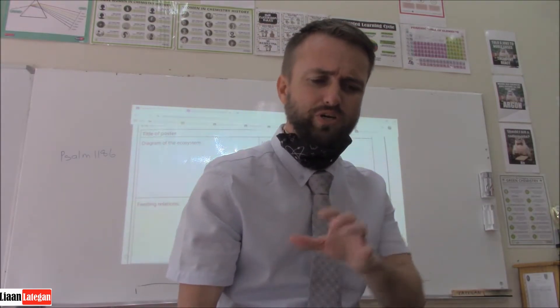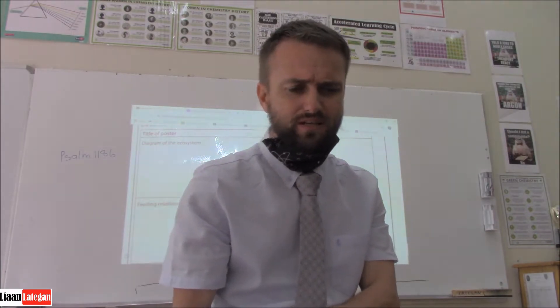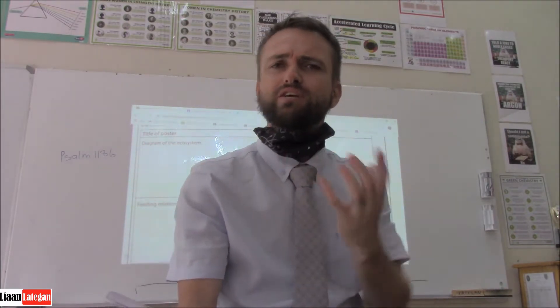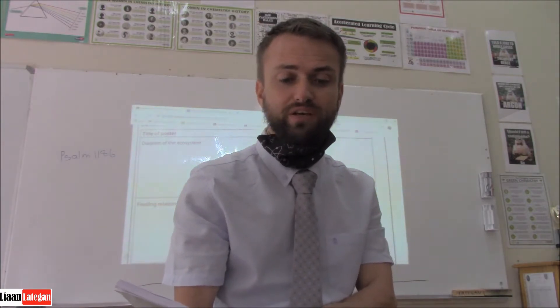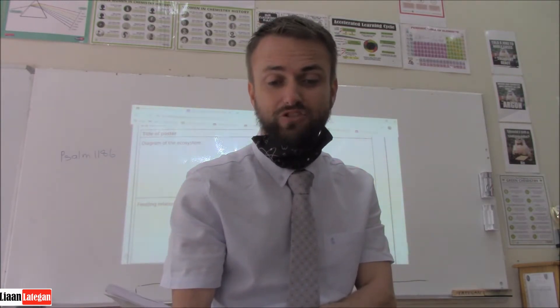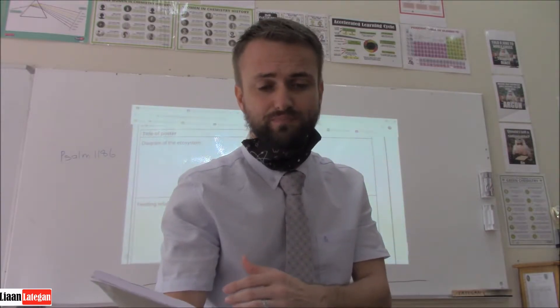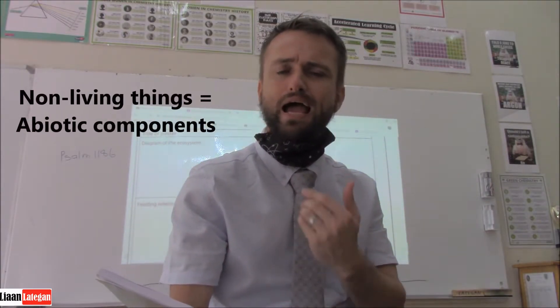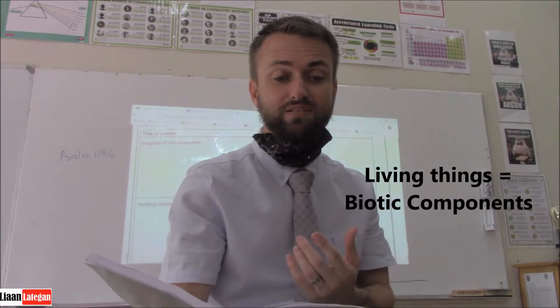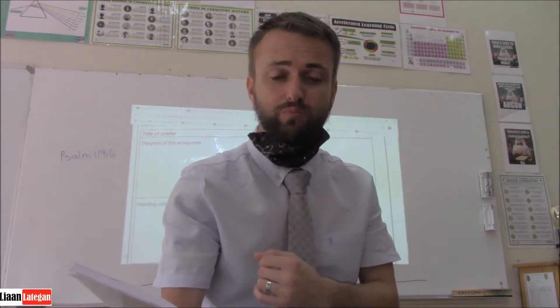So what we're going to talk about is what an ecosystem is. An ecosystem is an area in which all the living things interact with each other and with the non-living things in the environment. We refer to the non-living things as the abiotic components or abiotic factors, and the living things as the biotic components.